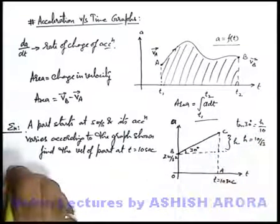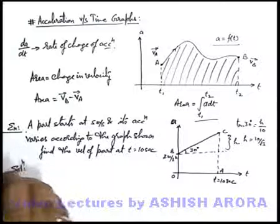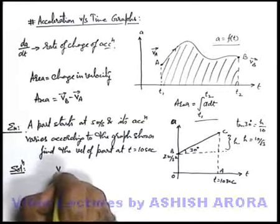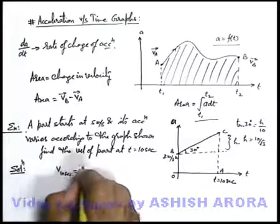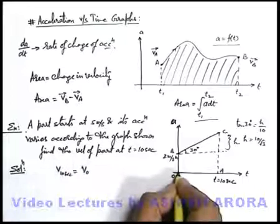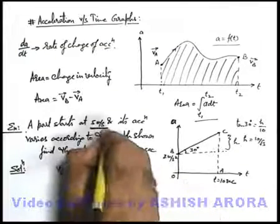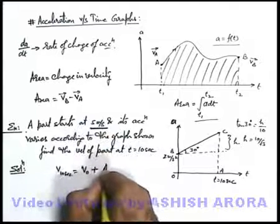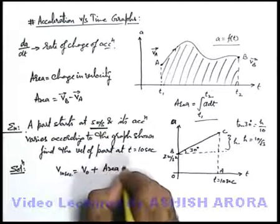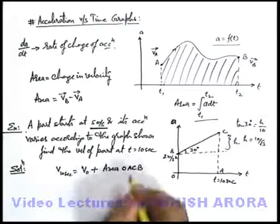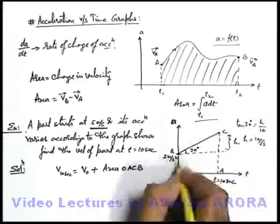Now in this situation we can write in the solution that velocity of particle at 10 second is equal to velocity at time zero, which we already have, which is 5 meters per second, plus area OACB.